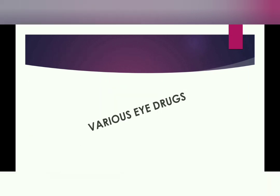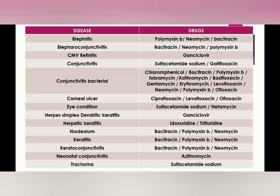I have prepared a table of various eye drugs used in various eye diseases. For blepharitis, we use polymyxin B, neomycin, and bacitracin. For blepharoconjunctivitis, we use bacitracin, neomycin, and polymyxin B. For CMV (cytomegalovirus) retinitis, we use ganciclovir. For conjunctivitis, we use sulfacetamide sodium and gatifloxacin. For conjunctival bacterial infection, we use chloramphenicol, bacitracin, polymyxin B, tobramycin, azithromycin, gentamicin, erythromycin, levofloxacin, neomycin, polymyxin B, and ofloxacin.